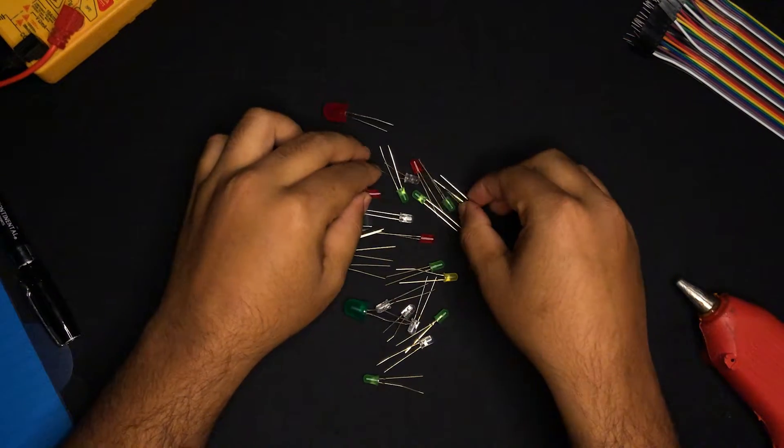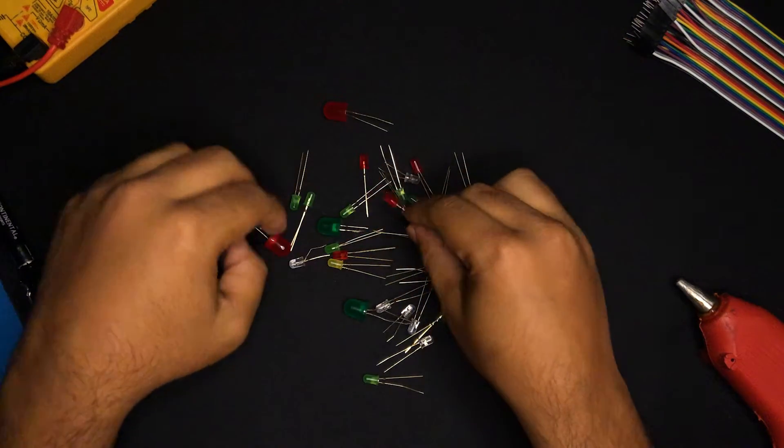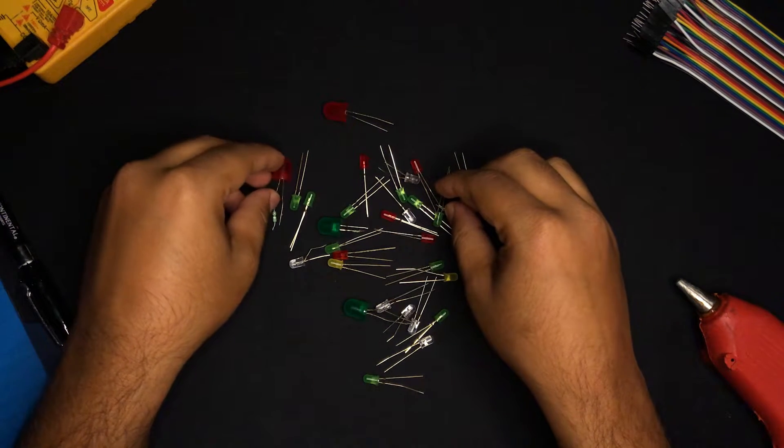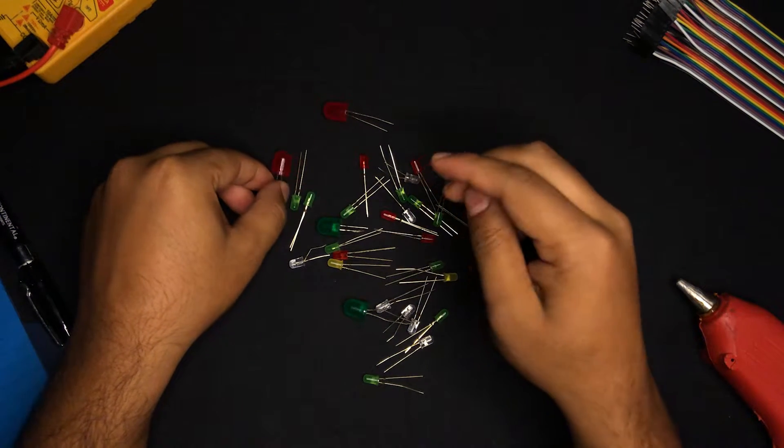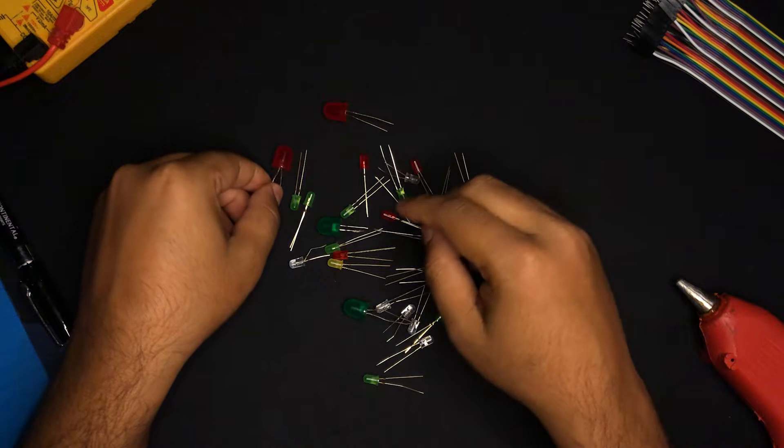As you can see, we have different sizes: 3mm LEDs, 10mm LEDs, 5mm LEDs. It depends on the usage and also the circuit. Now, how do you get different colors of an LED?